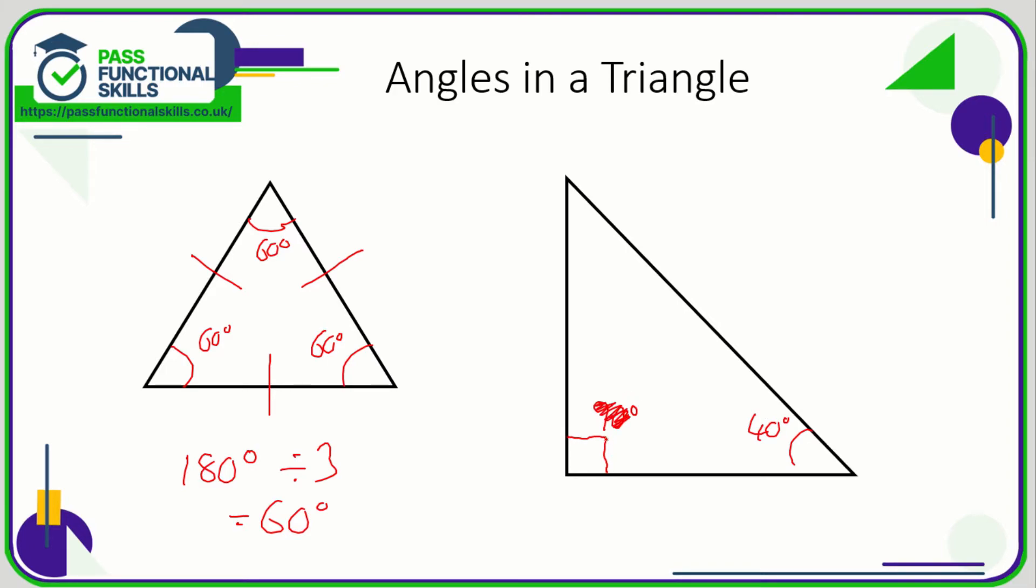It will just do this little symbol here and you need to work out this angle up top perhaps. So you need to remember that this sign means 90 degrees. So 90 plus 40 is 130, so therefore x must be 50 degrees.